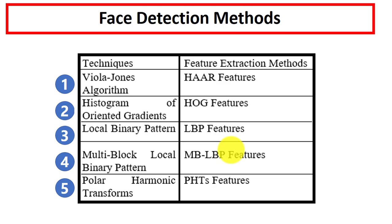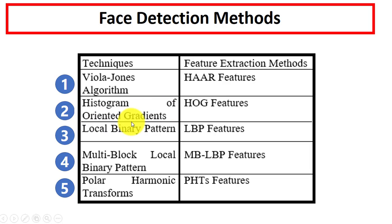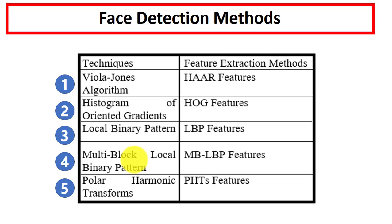Next, we have different types of face detection methods. The techniques and their feature extraction methods are: first, the Viola-Jones algorithm, which uses Haar-like features; next, Histogram of Oriented Gradients (HOG), which produces HOG features; then Local Binary Pattern (LBP) with LBP features; then Multi-Block Local Binary Pattern (MBLBP) with MBLBP features; and finally Polar Harmonic Transform. Using all these techniques we can detect a human face from digital images.